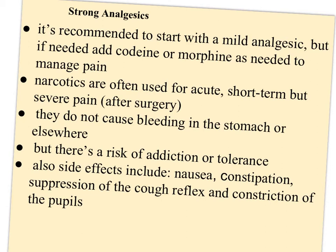Tolerance and addiction are slightly different: tolerance means you need a higher dosage to get the same effect, while addiction means you crave the drug and go through withdrawal without it. Side effects include nausea, constipation, suppression of the cough reflex, and constriction of the pupils. Suppression of the cough reflex is actually one reason codeine is used in cough syrups — if you have a nonproductive cough that's just keeping you awake, a codeine cough syrup may be prescribed to suppress it.